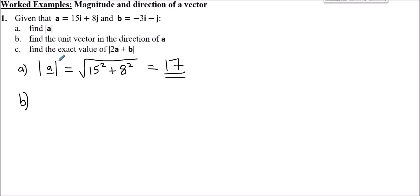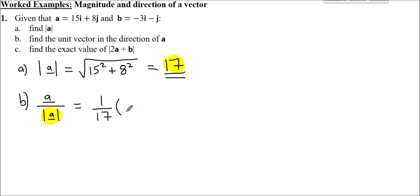Part d: find the unit vector in the direction of a. Because we want something parallel to a which is a unit vector, we take a and divide it by its own magnitude — divide by 17. Dividing by 17 is the same as doing one seventeenth of something, so the unit vector is one seventeenth of the vector a, which is 15i plus 8j.